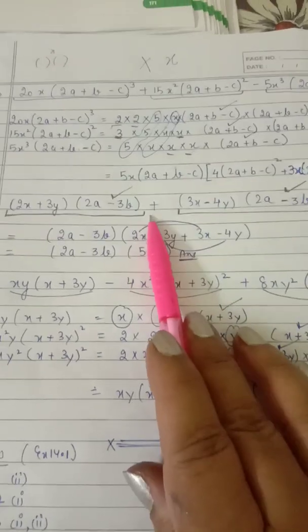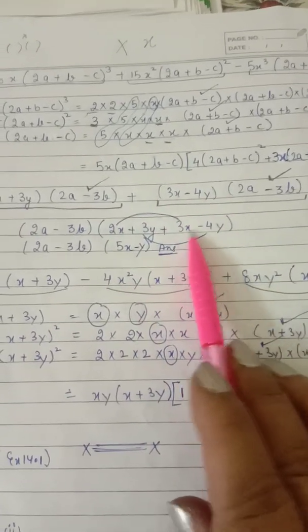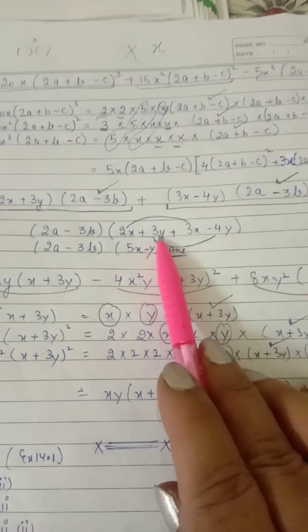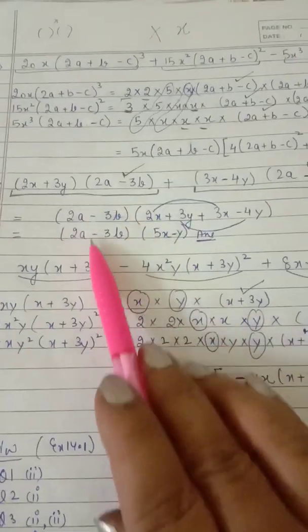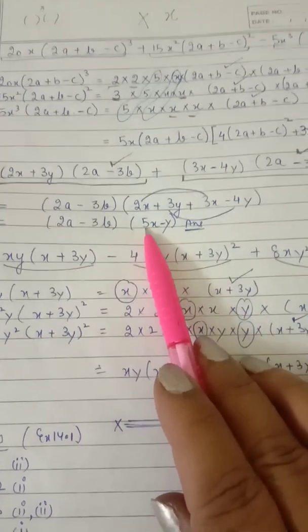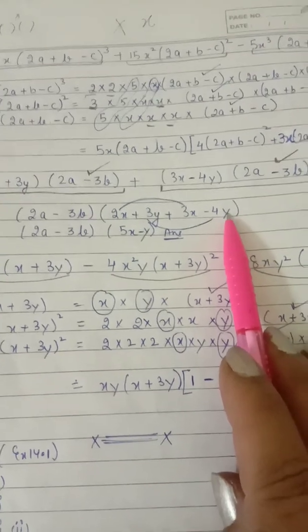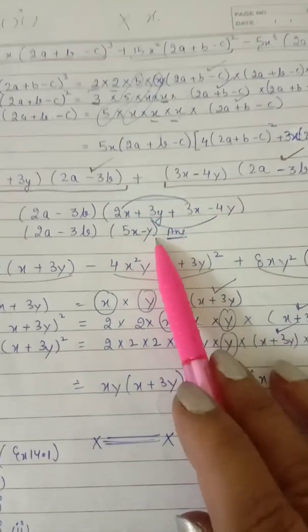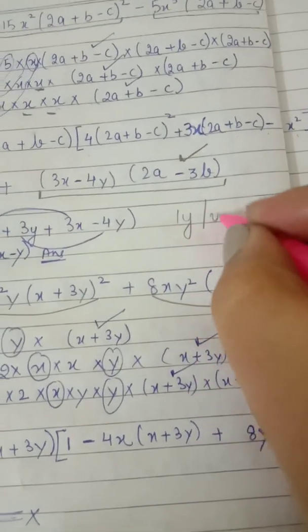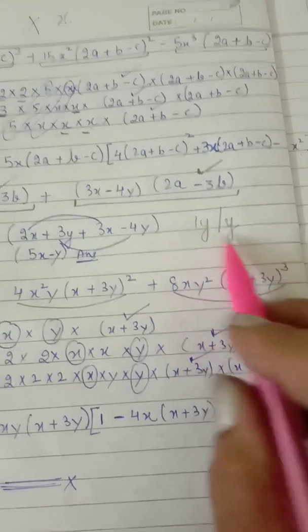So directly, I'm going to take (2a - 3b) in the bracket, then start another bracket with whatever is left. What is left from the first: (2x + 3y), and from the second: (3x - 4y). Now we have x and x terms, y and y terms, so we'll solve them. The outer value remains as it is. 2x + 3x — both positive — add them: 5x. Then 3y and minus 4y.